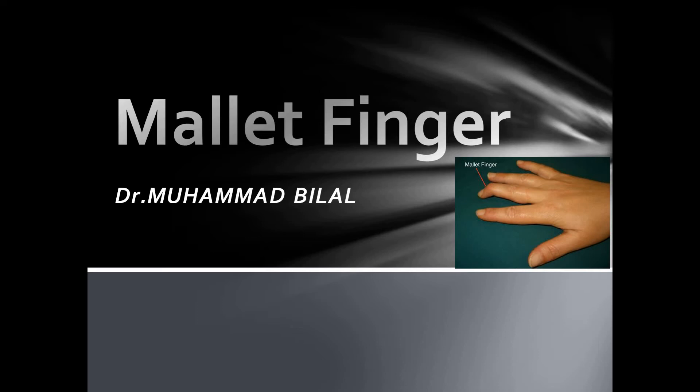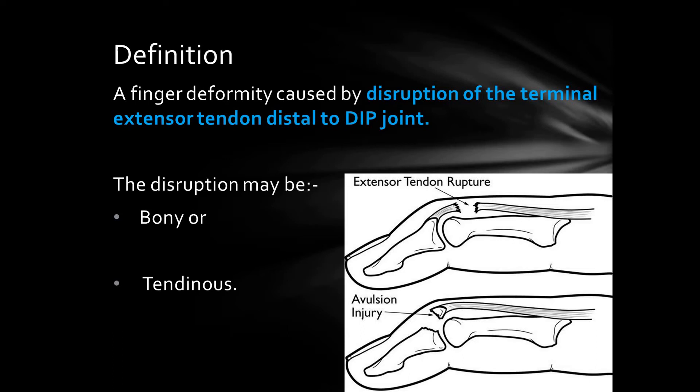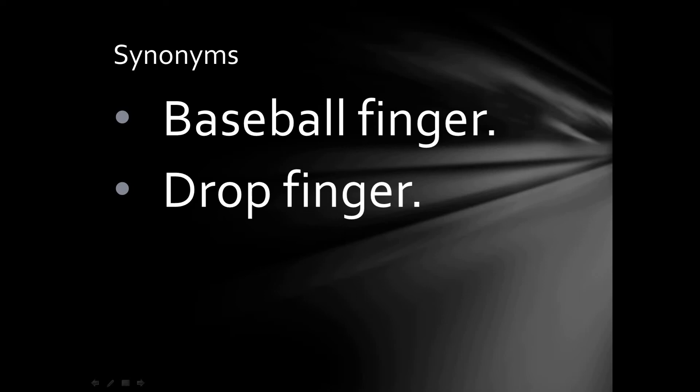Hello ladies and gentlemen, I am Dr. Mohamad Bilal and today we are going to discuss mallet finger. Mallet finger is a finger deformity caused by disruption of the terminal extensor tendon, distal to the distal interphalangeal joint. This disruption may be bony or tendinous.